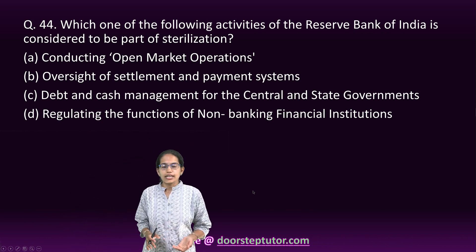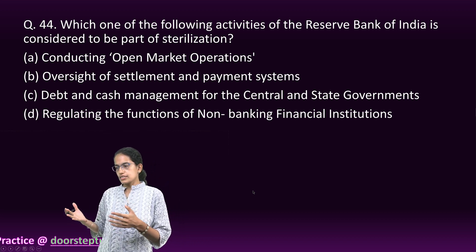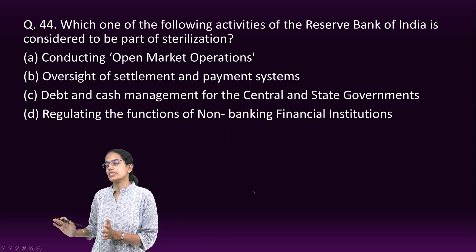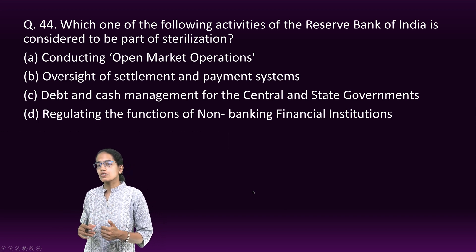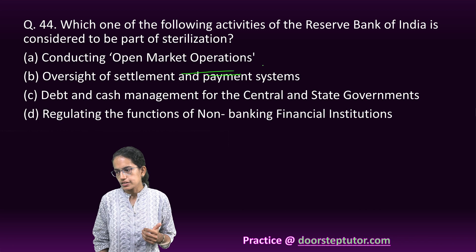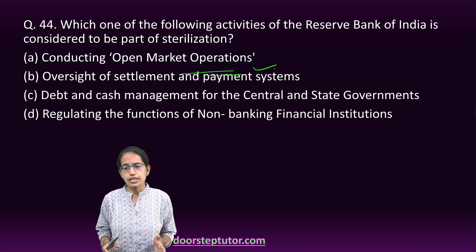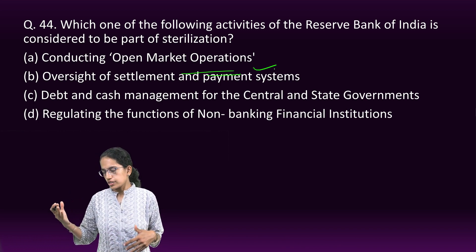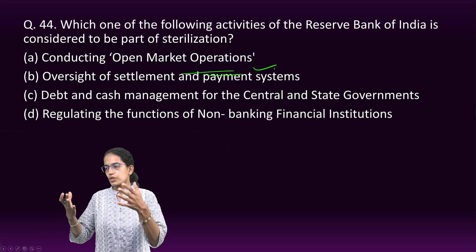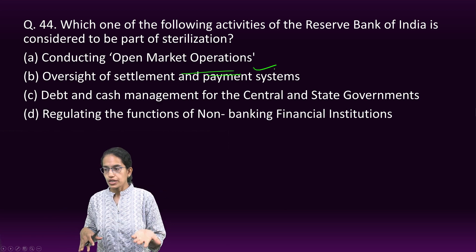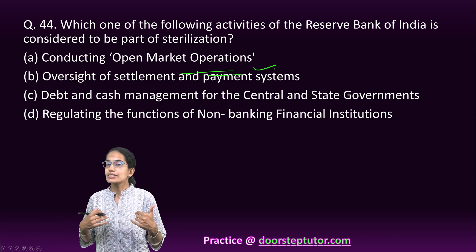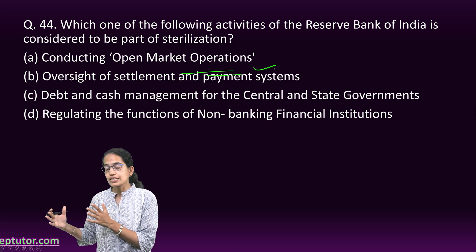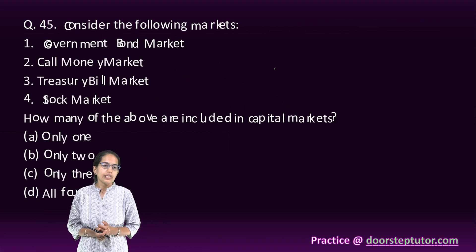On RBI activities: Sterilization is the process through which the RBI conducts the sale or purchase of foreign assets to check excess money supply. It is conducted as part of Open Market Operations. This has become extremely important when high volumes of foreign exchange lead to higher capital inflows, encouraging exports. The RBI buys foreign currency in such cases to manage excess money supply in the market.